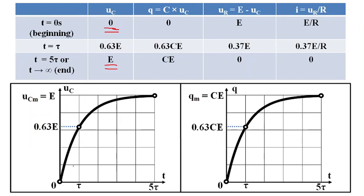It increases exponentially from zero to E. We have three particular instances. At T equal to zero, the capacitor was initially neutral, UC equal to zero. The capacitor needs 5 tau to complete the charging process. At T equal to 5 tau, UC becomes E. And at T equal to tau, UC is 0.63E.